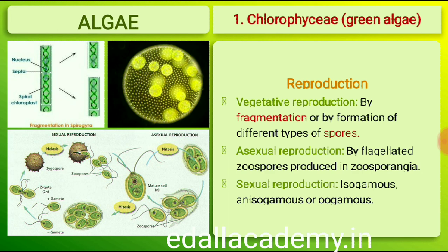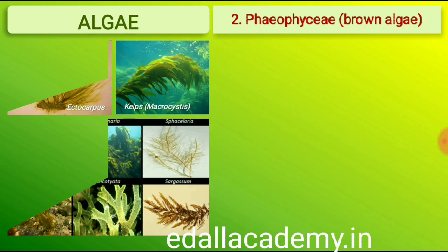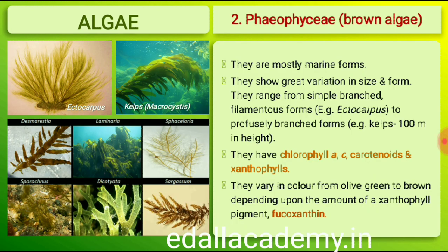Some commonly found green algae are Chlamydomonas, Volvox, Ulothrix, Spirogyra and Chara (figure 3.1a).